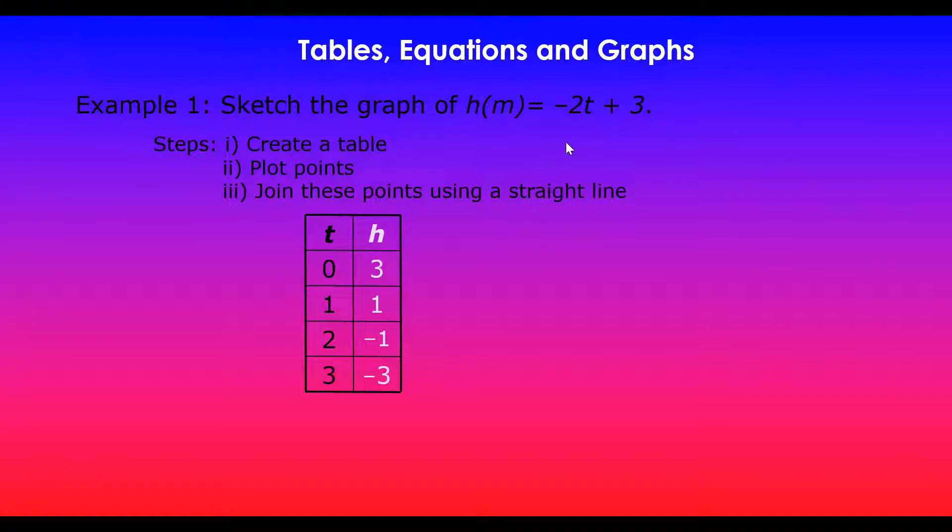Then you replace t by 1, so minus 2 times 1 is minus 2, minus 2 plus 3 is 1. And likewise replace t by 2, so negative 2 times 2 is minus 4, minus 4 plus 3 is minus 1. And finally I've got 3, so negative 2 times 3 is negative 6, negative 6 plus 3 is minus 3.